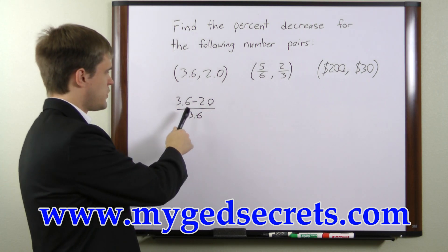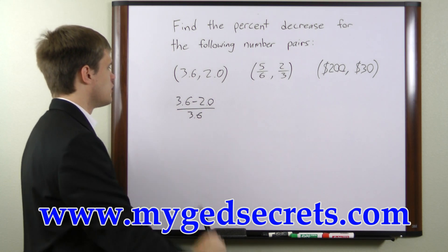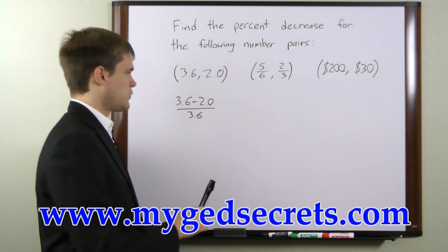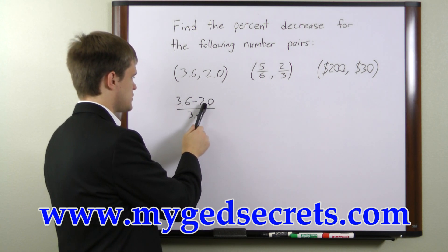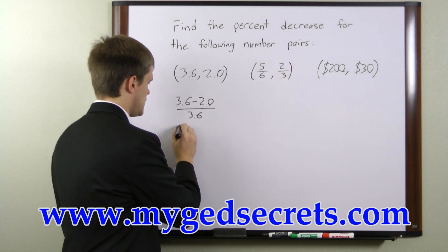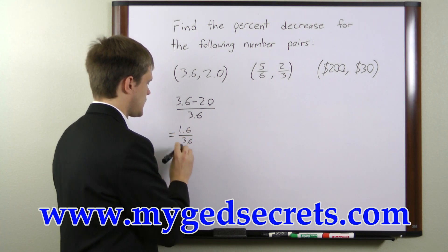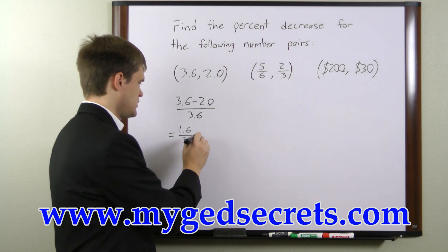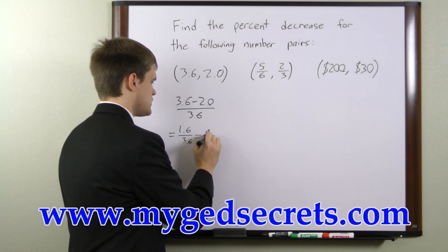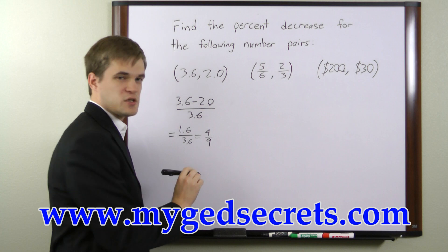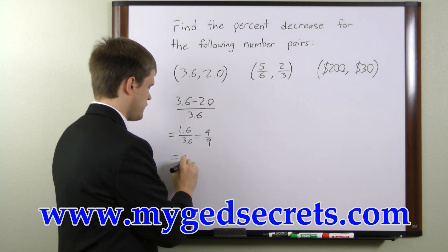So what we have is 3.6 minus 2.0 over 3.6. We can simplify this by subtracting 2 from 3.6 and we get 1.6 over 3.6. Now if you reduce this fraction, what you wind up with is 4 over 9, whose percentage equivalent is 44.4%.